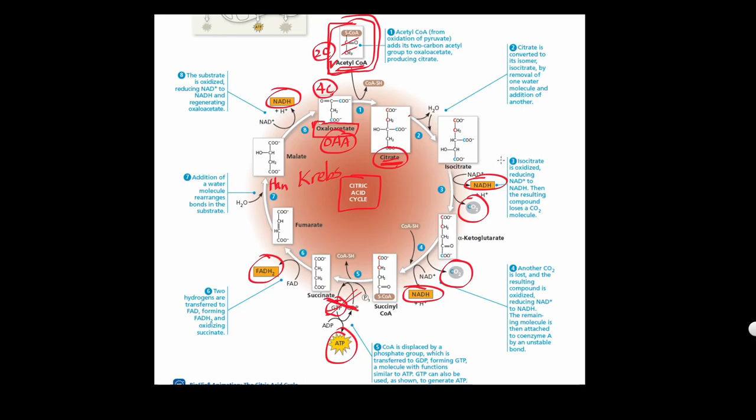And then you're gonna make one, two, three NADHs and then one FADH2 and then one ATP. And then you're gonna lose two carbon dioxide per one cycle. You gotta multiply this by two if you start with one glucose. Remember glucose broke into two pyruvates which will later make two acetyl-CoAs. Now we're ready to move on to the next step.